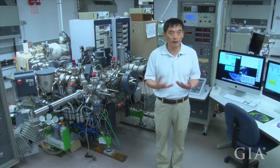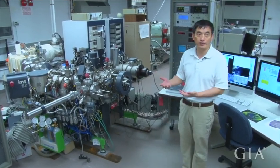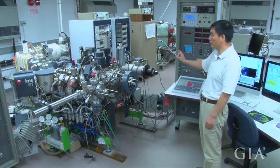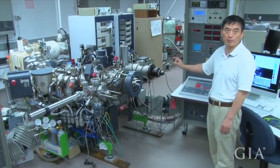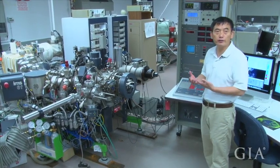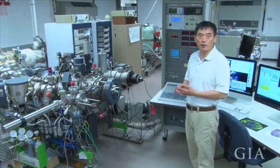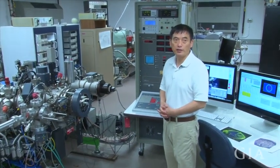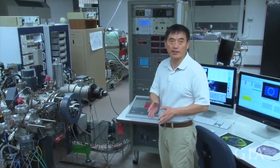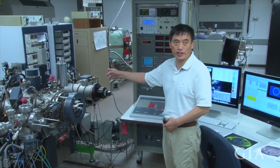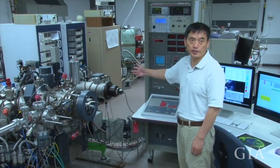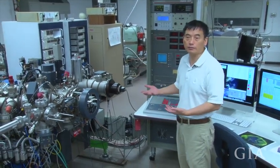We have different modes of detecting ions. One mode shows what ions are coming from the sample using an image, and another mode measures different isotopes coming from that spot. We do a scanning of different masses using the mass spectrometer, changing the magnetic field and detecting isotopes at different masses.